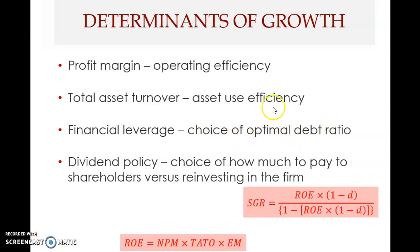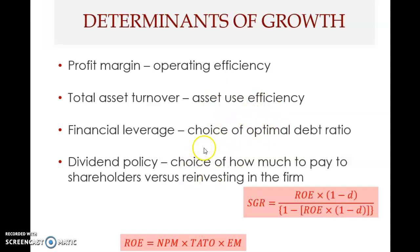The third factor is the equity multiplier, which measures financial leverage — the choice of optimal debt ratio. The fourth factor is the dividend payout ratio, based on dividend policy. Higher operating efficiency, higher asset use efficiency, higher use of debt, and lower dividend payout ratio all result in a higher growth rate. These are the four determinants of growth.